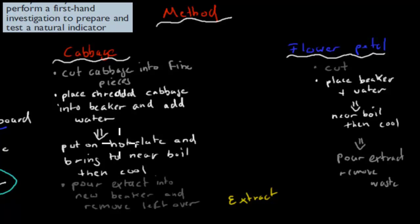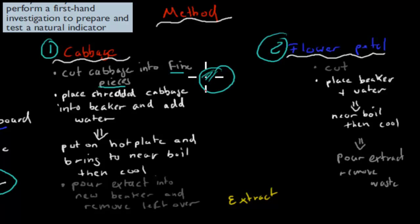What you would have done is first, for both the cabbage and your flower petals, you would have checked to first extract that important part. For cabbage was anthocyanin. The way we can extract this is by first cutting cabbage into fine pieces, so we shred it. Then once we have those shreds, the smaller parts, we place those shredded cabbage into a beaker.